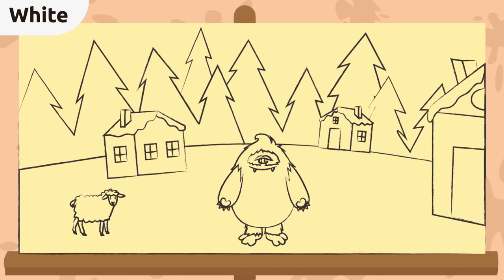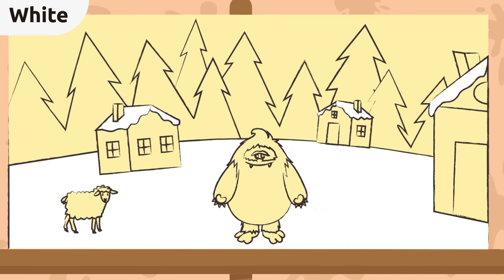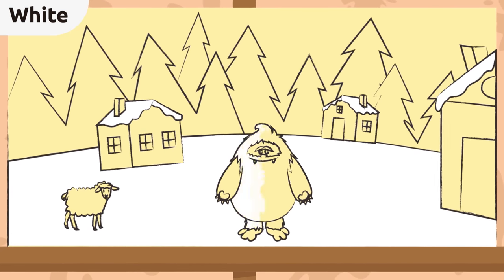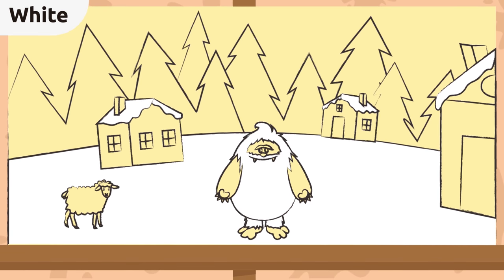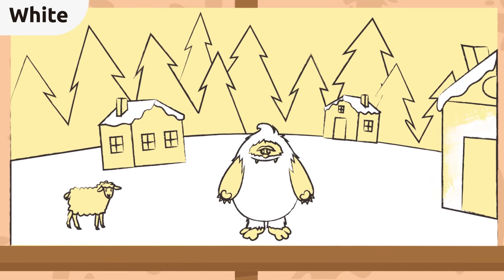Let's see how many things we can color white. The snow is white. Hmm, this yeti right here, so cool. What else? The wall of this house.